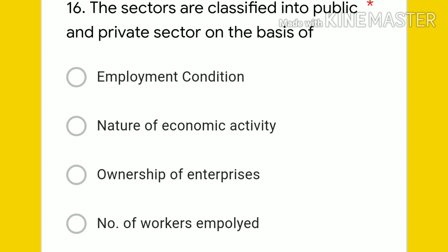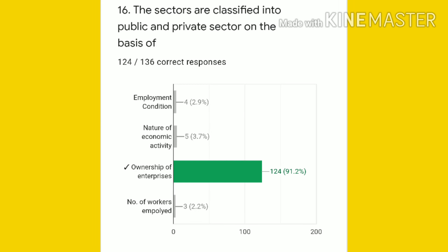Question 16: sectors are classified into public and private on the basis of — employment condition, nature of economic activity, ownership of enterprise, or number of workers employed. The answer is ownership of enterprise. On the basis of ownership, industries are classified into private and public sector. 124 students gave the right answer.